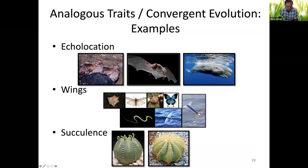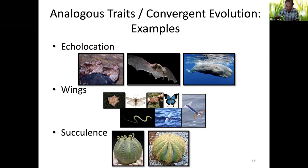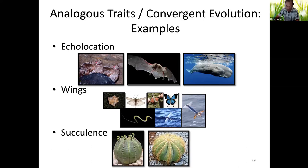Another example of convergent evolution is succulents. Euphorbias look like cacti but belong to a different plant family — Euphorbiaceae versus Cactaceae. This succulent form evolved multiple times in different plant groups because both evolved to survive in deserts where water is scarce, and succulence allows them to retain water. These are all examples of analogous traits that evolved through convergent evolution.